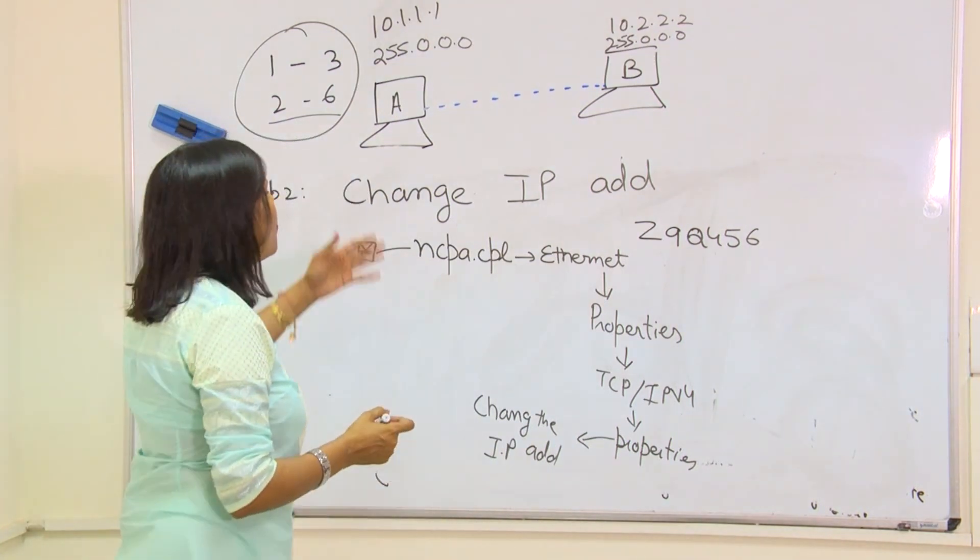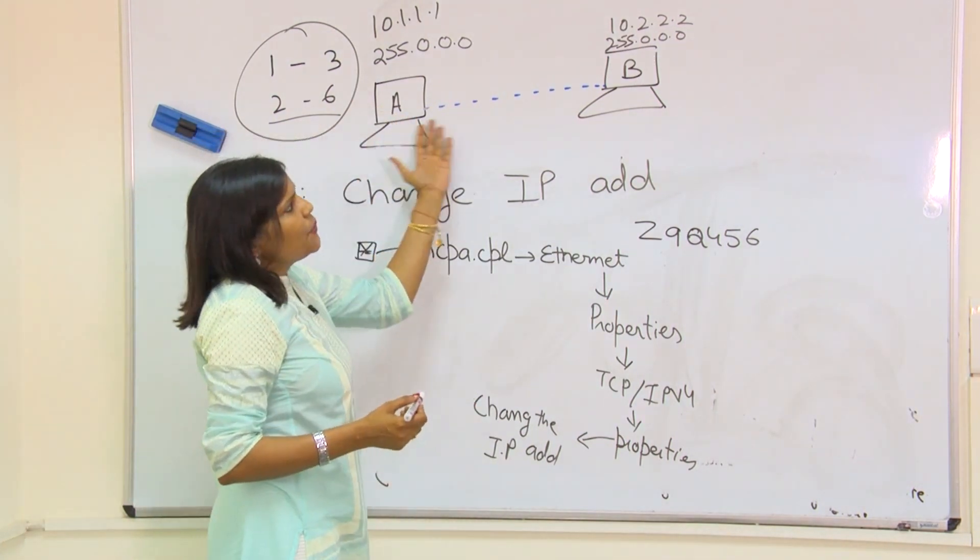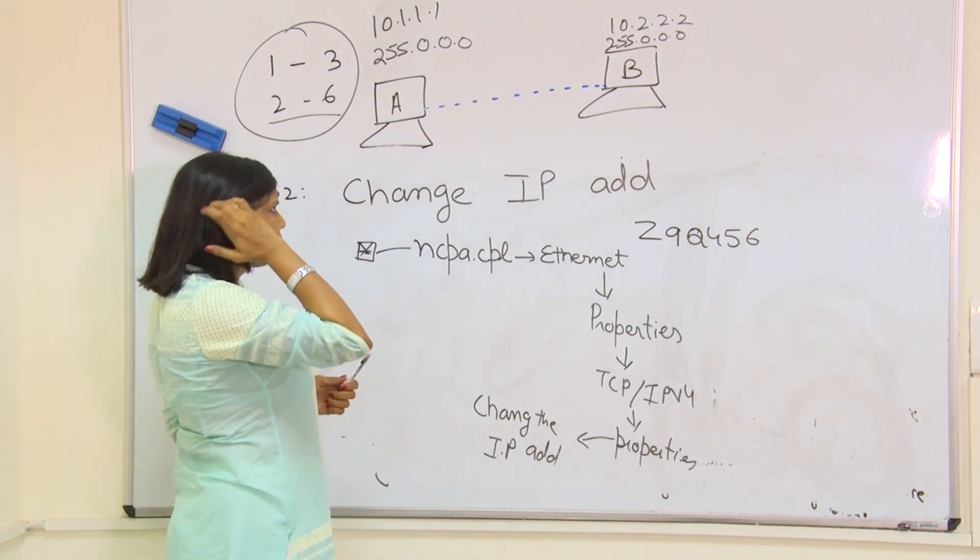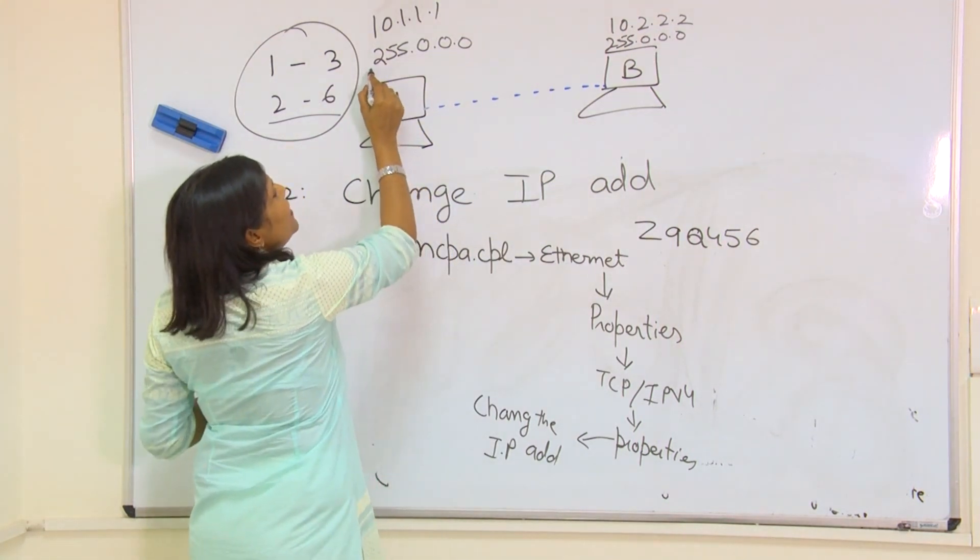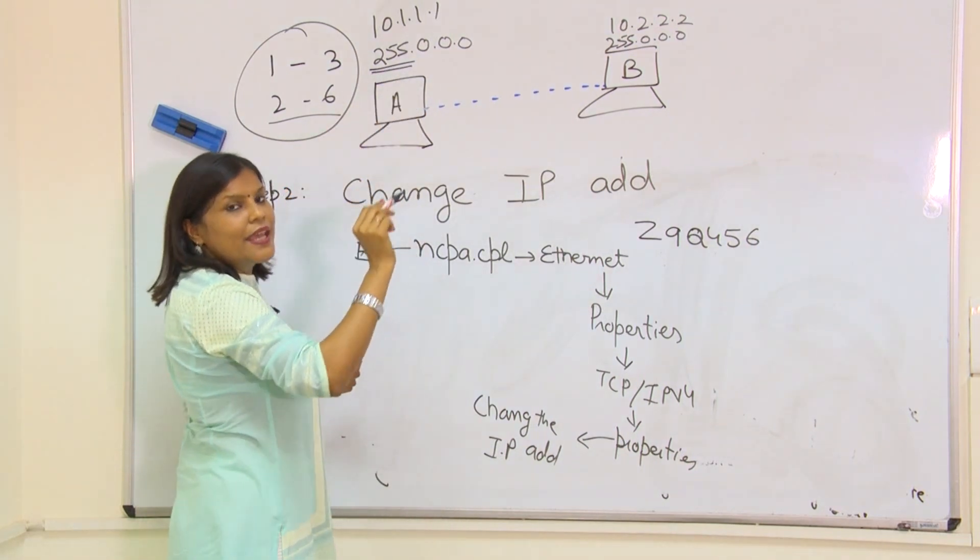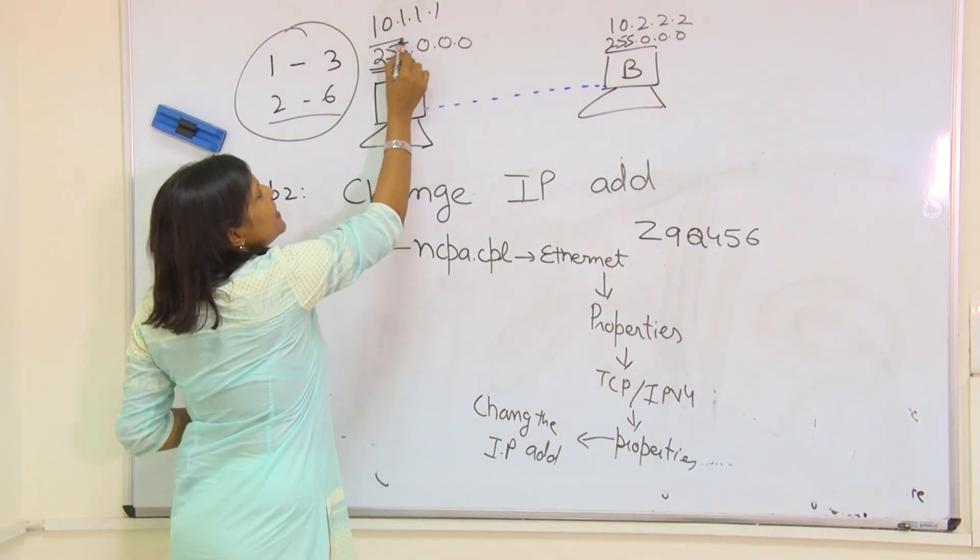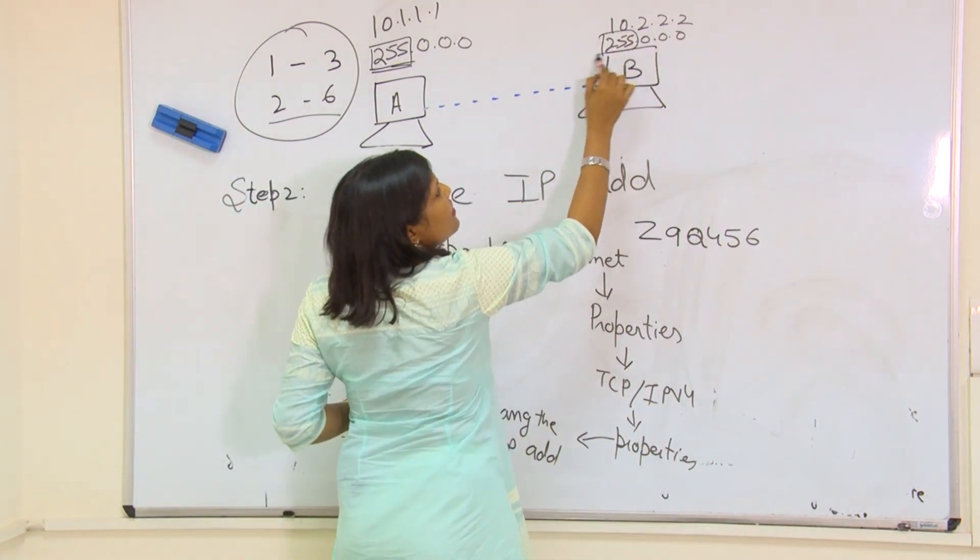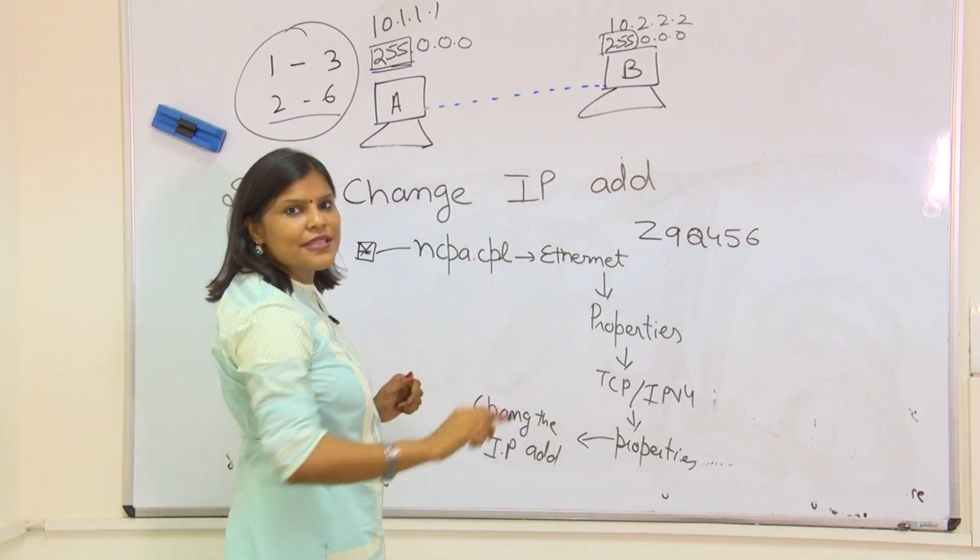Now the point comes, what is the network address here and who will decide the network address? Your subnet mask. Can you see this? I have written 255 here, this is 255 here. The subnet mask is the same on both sides.